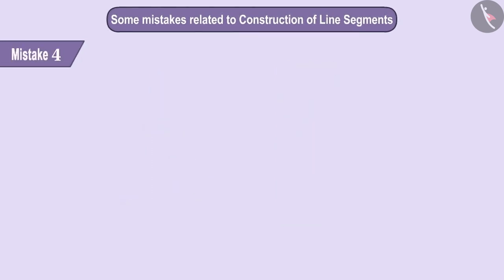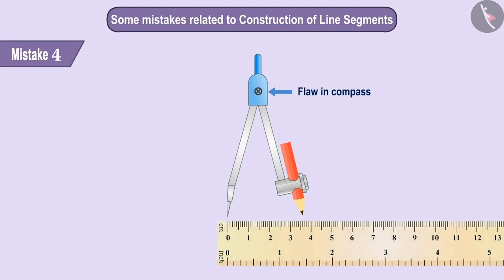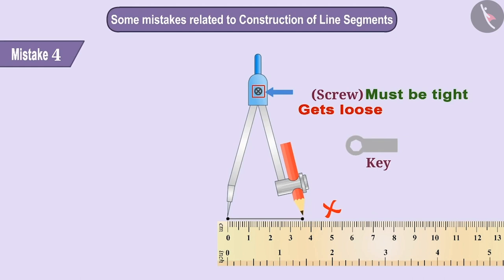Mistake 4. Sometimes because of a flaw in the compass, the distance does not remain constant and this is another reason why length of the line segment might be wrong. The flaw in the compass might be because sometimes the screw behind the compass is loose. The screw of the compass must always be tight. We can tighten the screw with the help of the key given with the compass. Therefore, it is necessary to check the screw periodically.